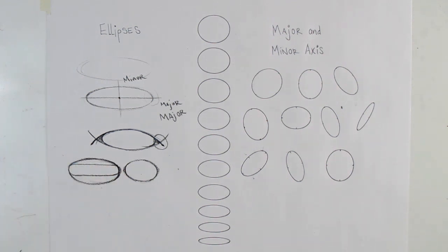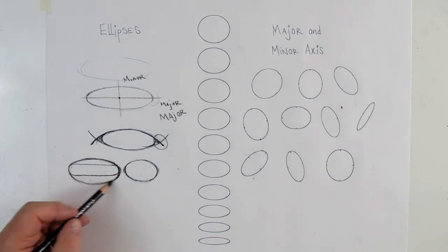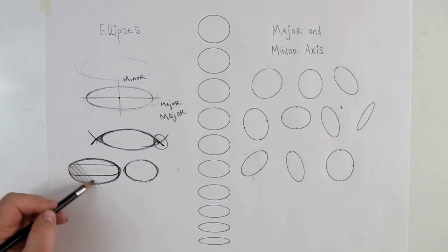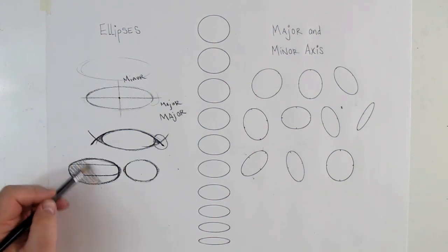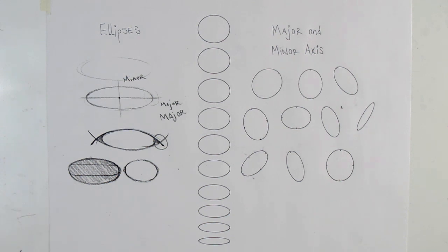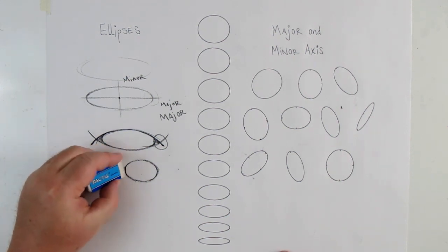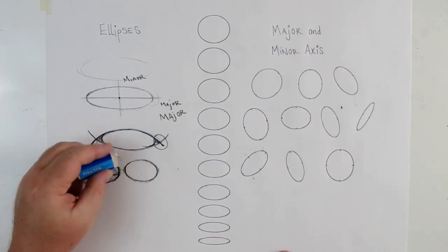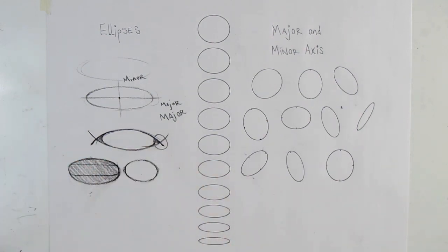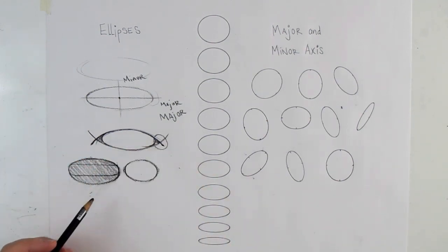Ellipses are always round and they should be symmetrical — this side should be the same as that. If we fill that in, it's not too bad an ellipse. Is it perfect? No, but it's not too bad. We want to make an ellipse that is always round, never pointed, and never goes flat.